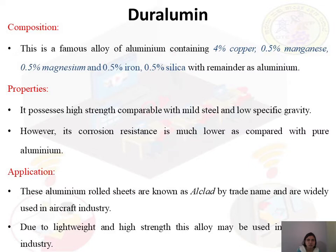Duralumin: the composition contains approximately 90 percent aluminium, four percent copper, 0.5 percent manganese, 0.5 percent magnesium, 0.5 percent iron, and 0.5 percent silica — with the remaining 94 percent as aluminium. Coming to its properties, it possesses high strength compared to pure aluminium or mild steel, and has less specific gravity meaning it is light in weight with less density.